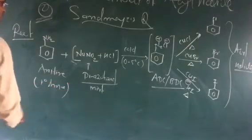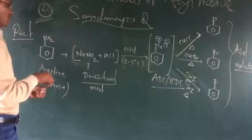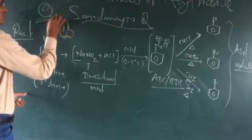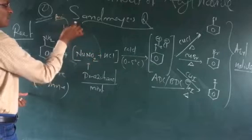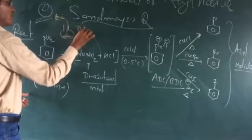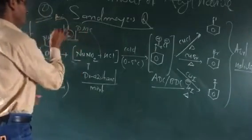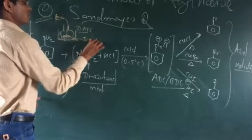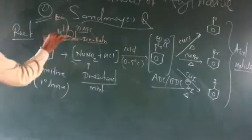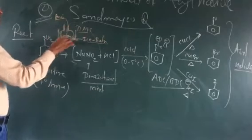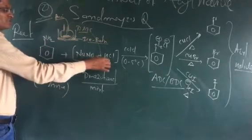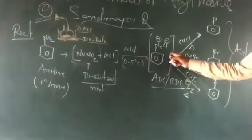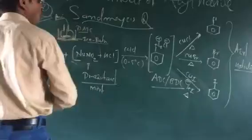In the lab setup, we have a beaker containing aniline. Addition of aniline and the diazotized salt is carried out in an ice-cold water bath. The beaker is placed in the ice bath, and aniline is added to the mixture. After some time, a yellowish-reddish brown precipitate is obtained.